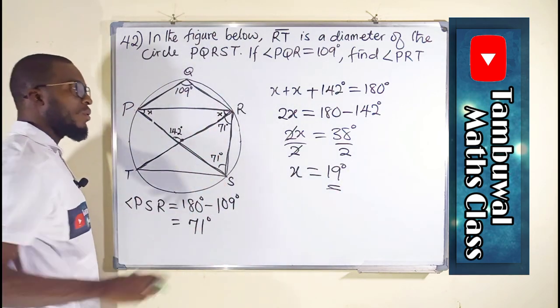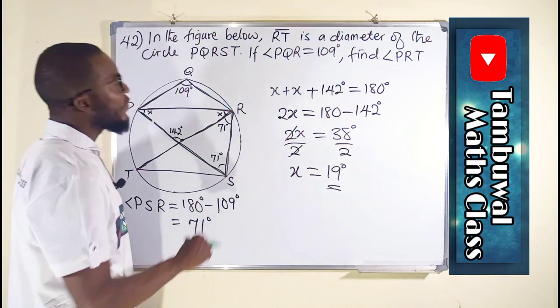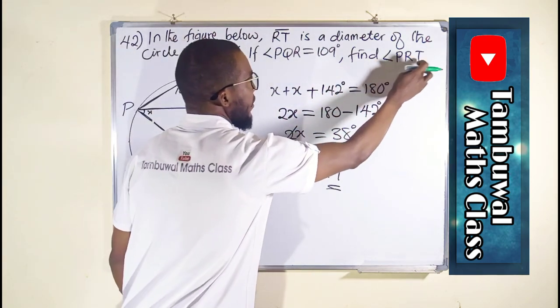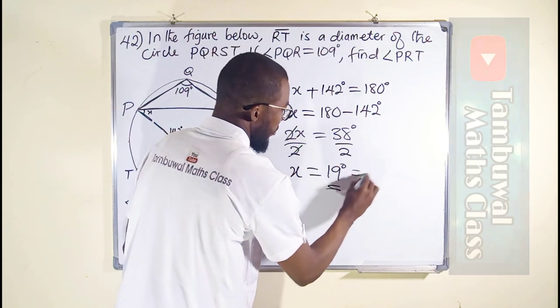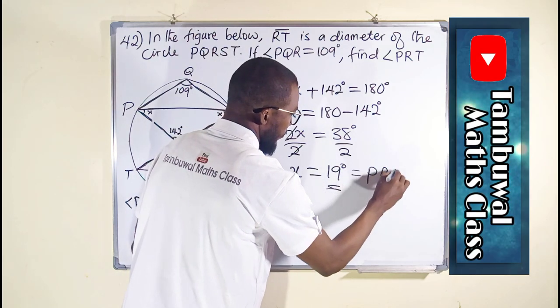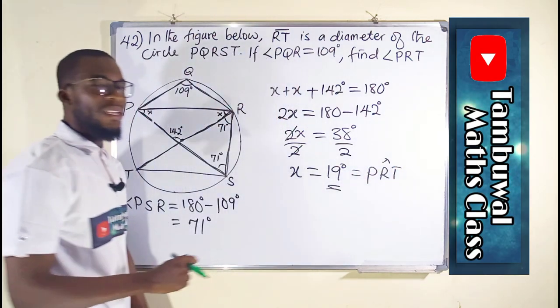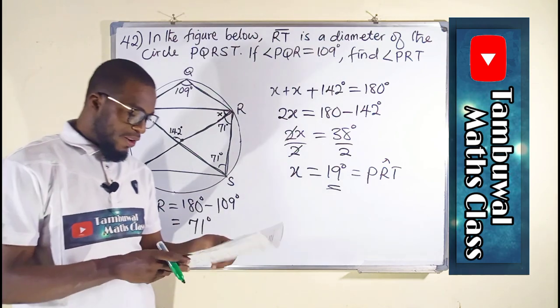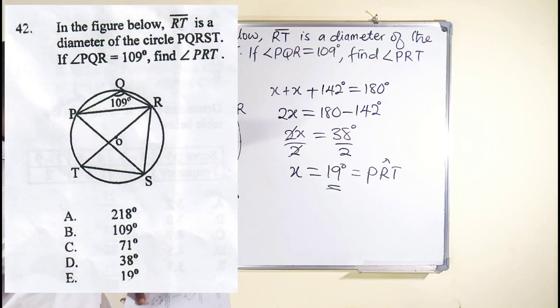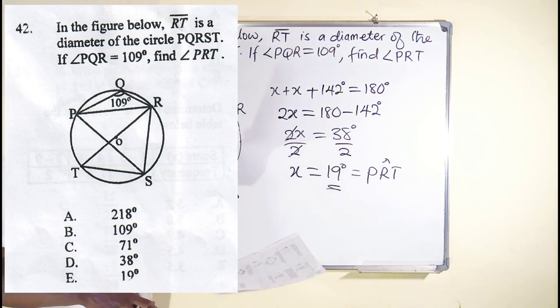X is now equal to 19 degrees. And therefore, this angle, which is the required angle we are looking for, angle PRT, is equal to 19 degrees. And we have it here as option E. But let me show you another way you can find this angle.